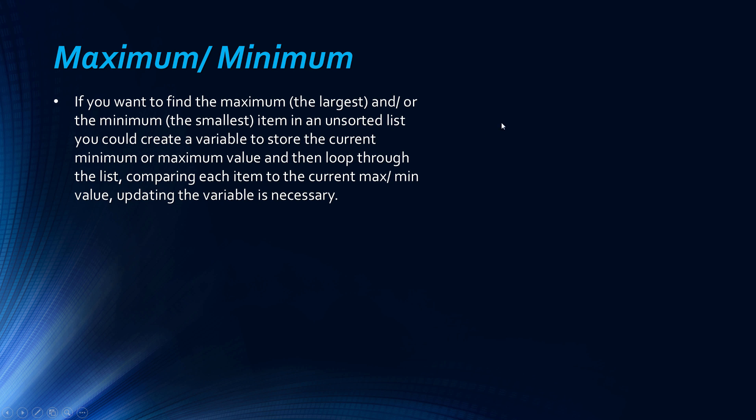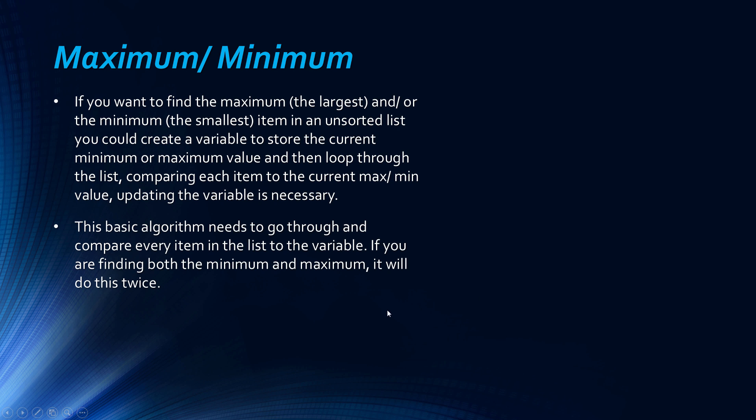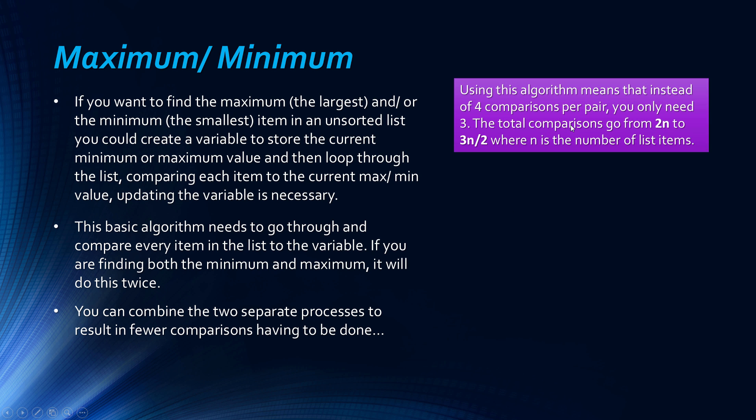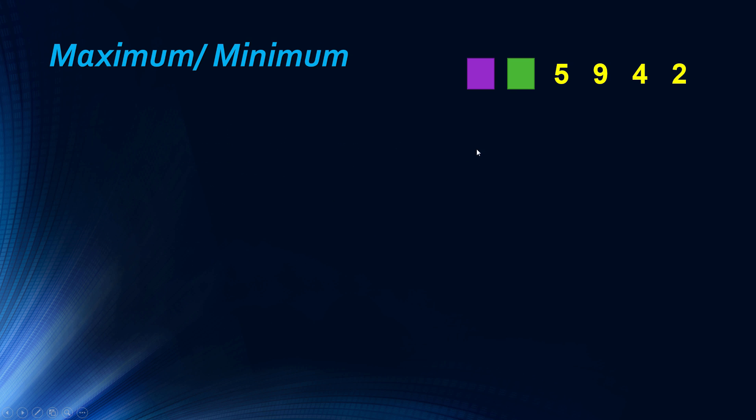And what you could do, you could potentially just basically create a variable and loop through the list, and update the variable as you find your current minimum and maximum value. And if you're doing it for both, you're going to have to do this whole process twice, for both the minimum and maximum value. What you can do, you can be slightly cleverer, and combine the two separate processes to result in fewer comparisons. Before we go through this, we'll just look at an example, because it will make more sense. So we start off with a very small list here. I've tried to conserve a bit of effort there. We've got four items, and these little boxes represent variables, and variables just hold data.